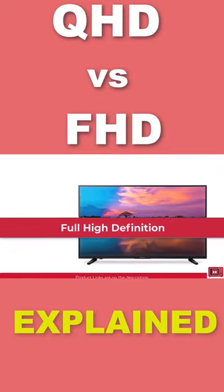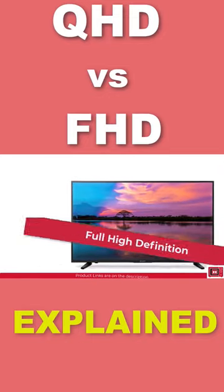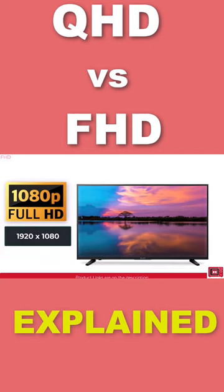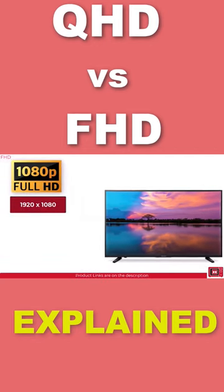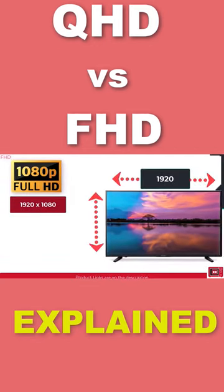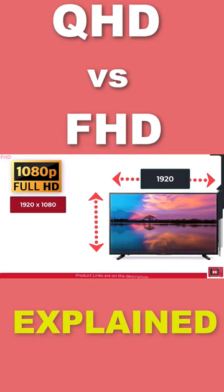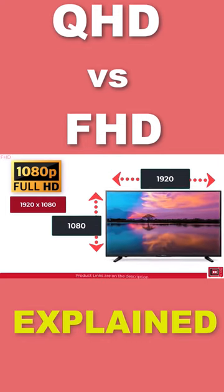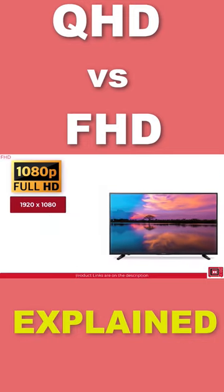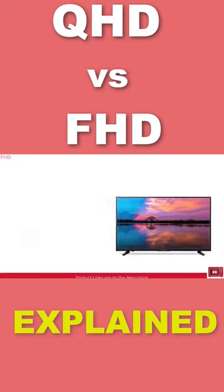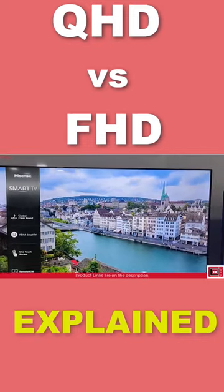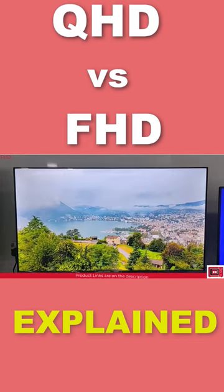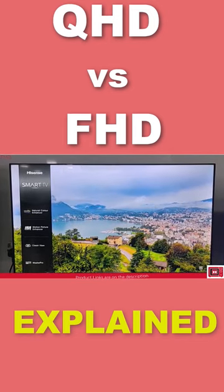FHD means Full High Definition. When you see FHD on a TV product, that tells you the TV has a total of 1920 pixels arranged on the length and 1080 pixels arranged on the width. That means this TV screen can play any content or video labeled 1080p or FHD on full screen by matching pixel for pixel.